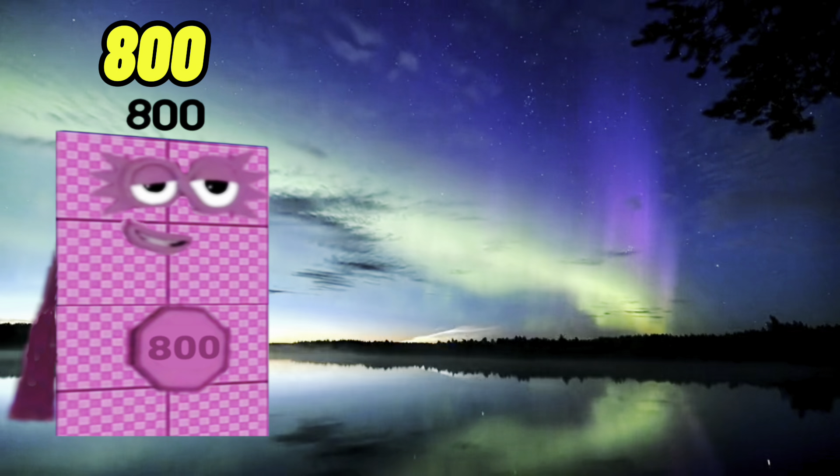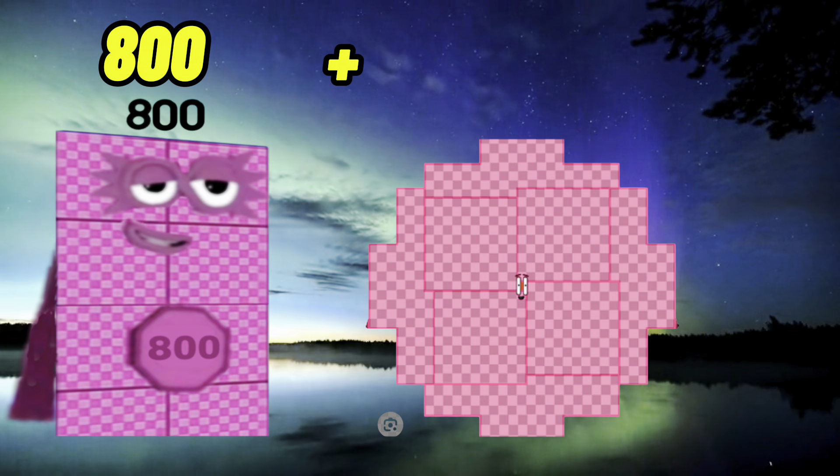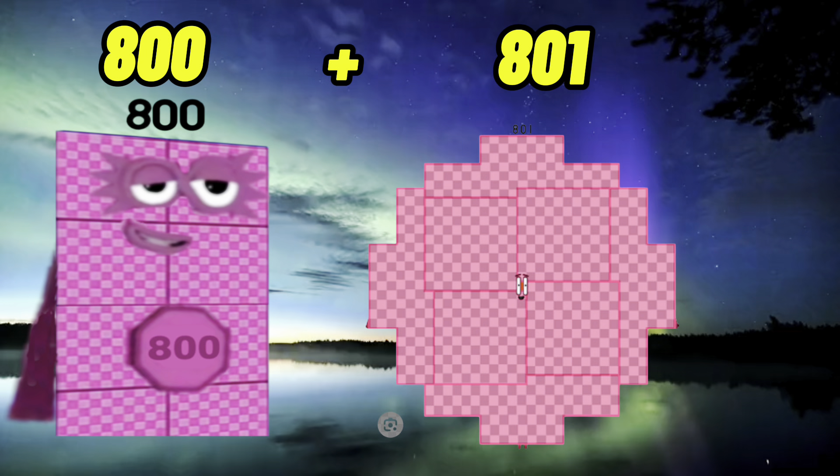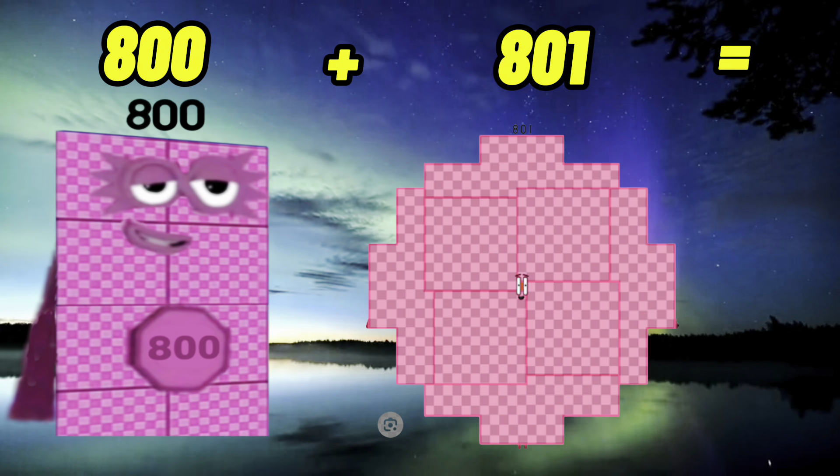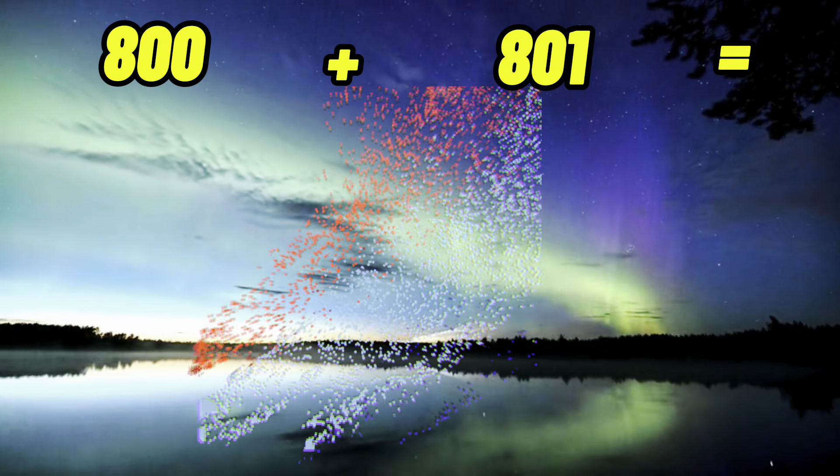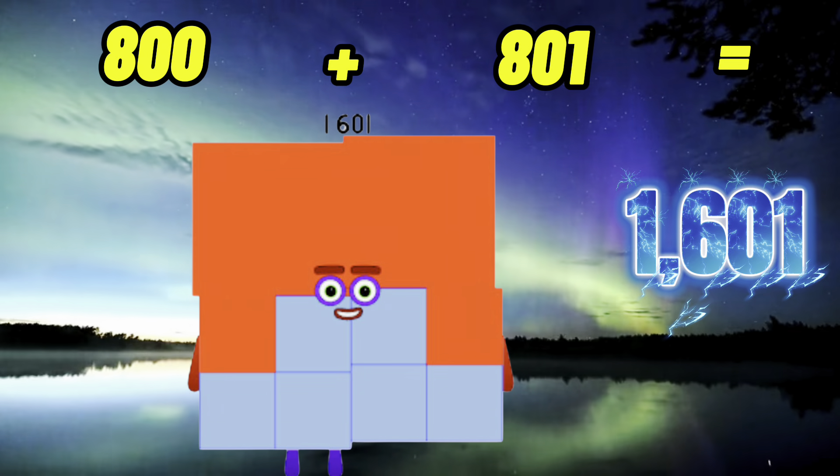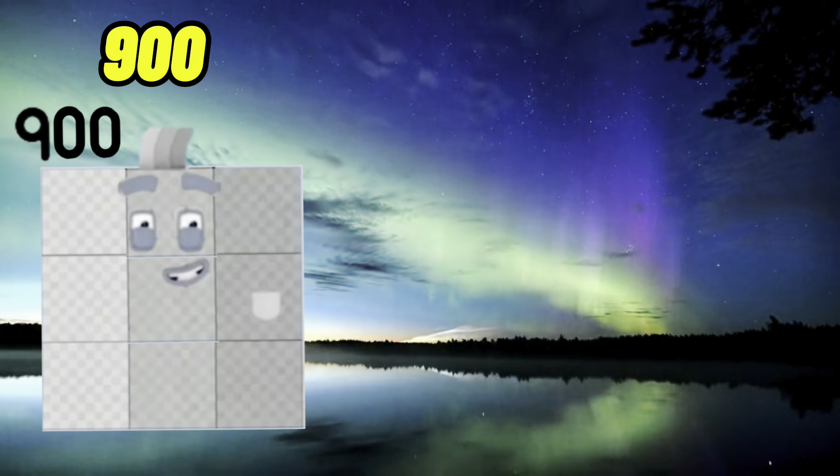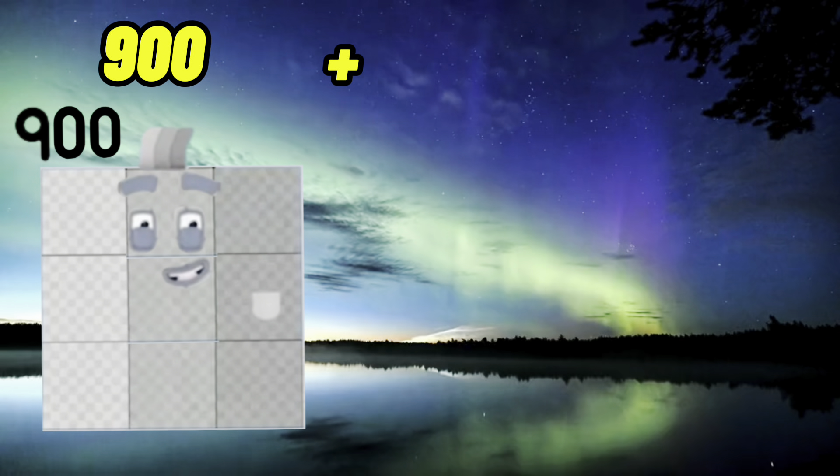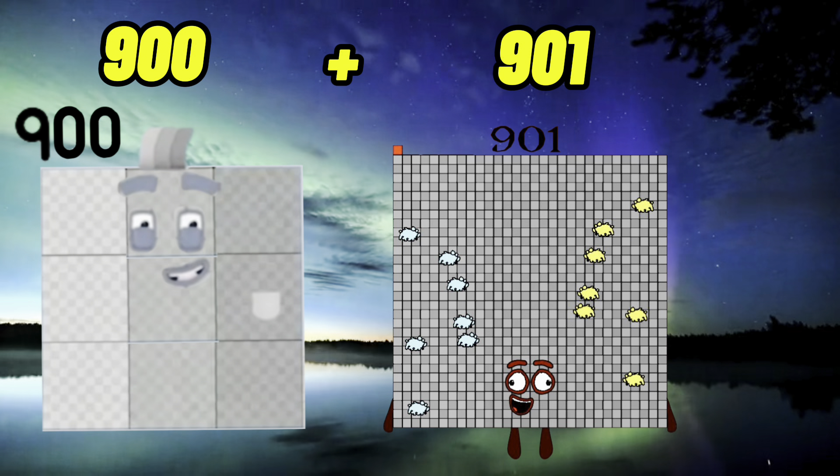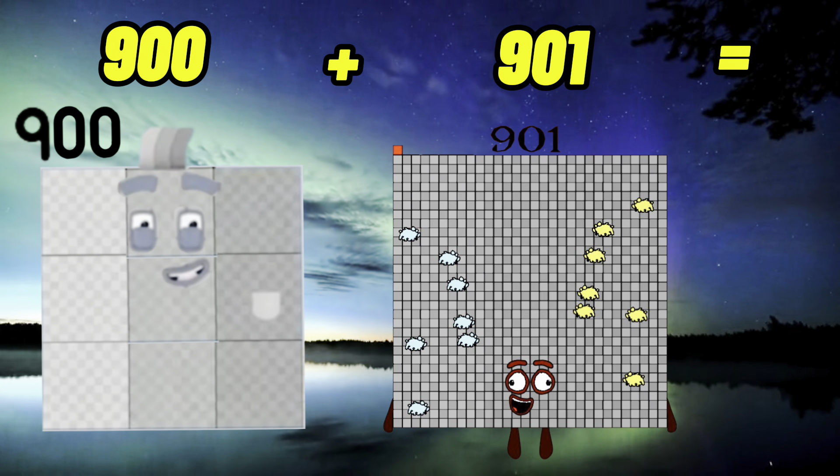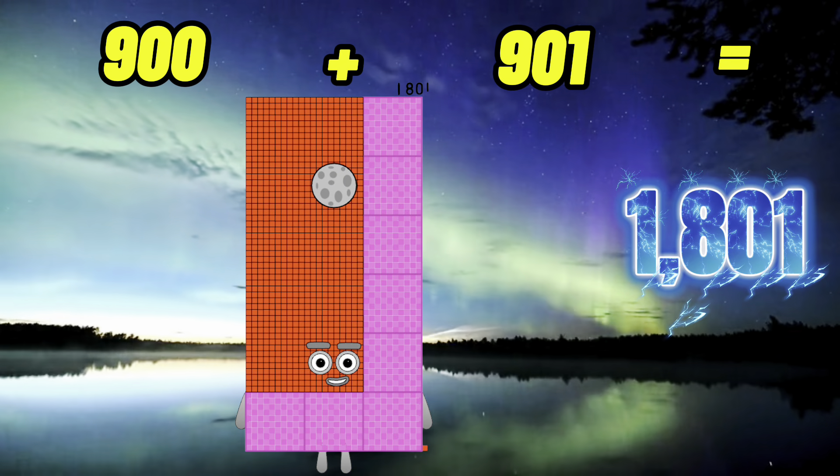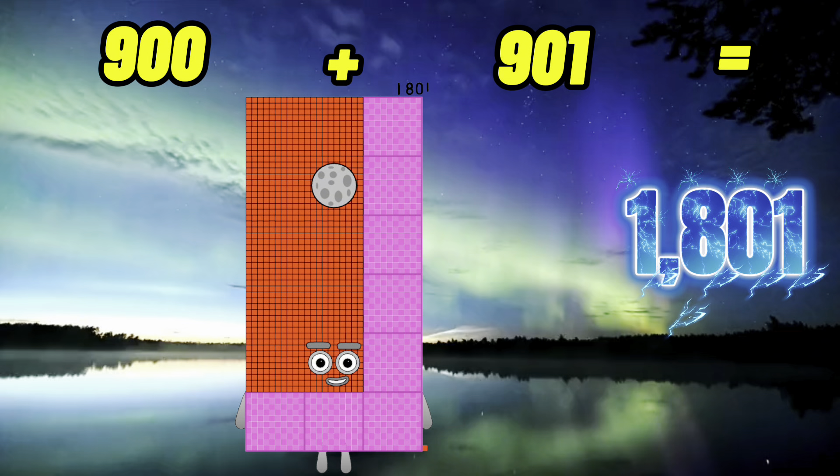800 plus 801 equals 1,601. 900 plus 901 equals 1,801.